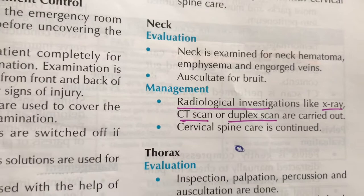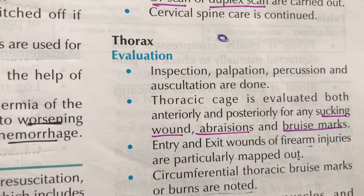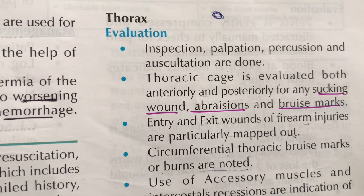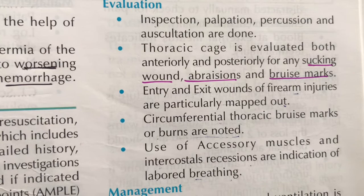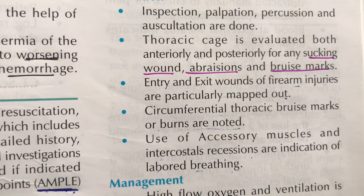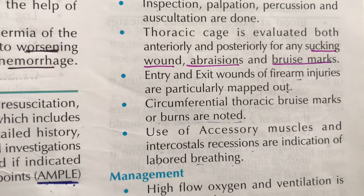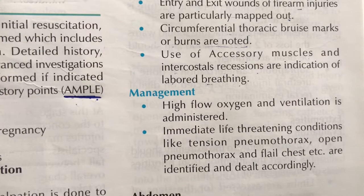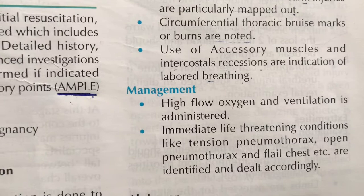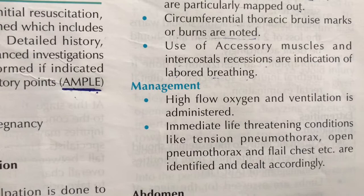Moving to thorax examination: detailed inspection, palpation, percussion, and auscultation are performed. The thoracic cage is evaluated both anteriorly and posteriorly for sucking wounds, abrasions, bruise marks, entry and exit wounds from firearm injuries, circumferential bruising, and use of accessory muscles or intercostal recessions indicating labored breathing. Management includes high-flow oxygen and ventilation, and definitive treatment of life-threatening conditions including open hemothorax, massive hemothorax, tension pneumothorax, and flail chest.